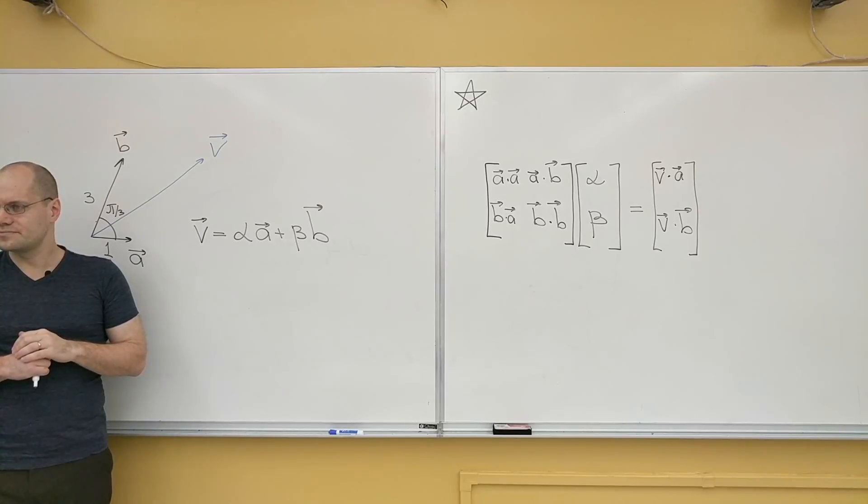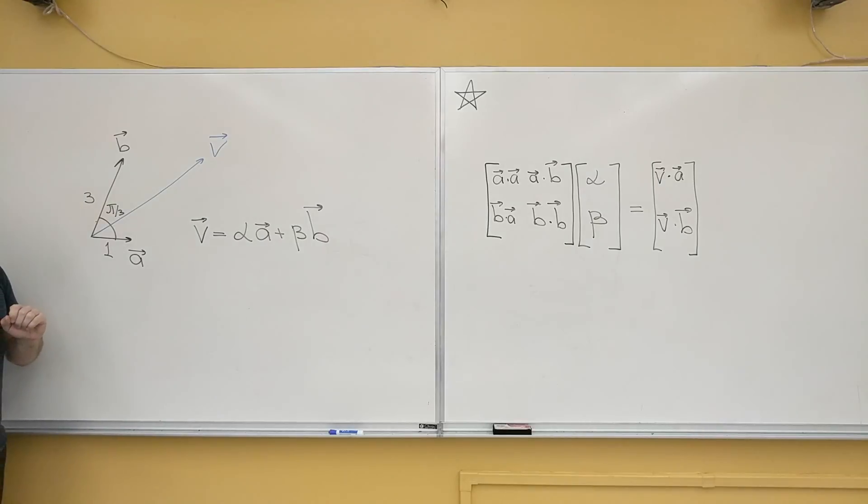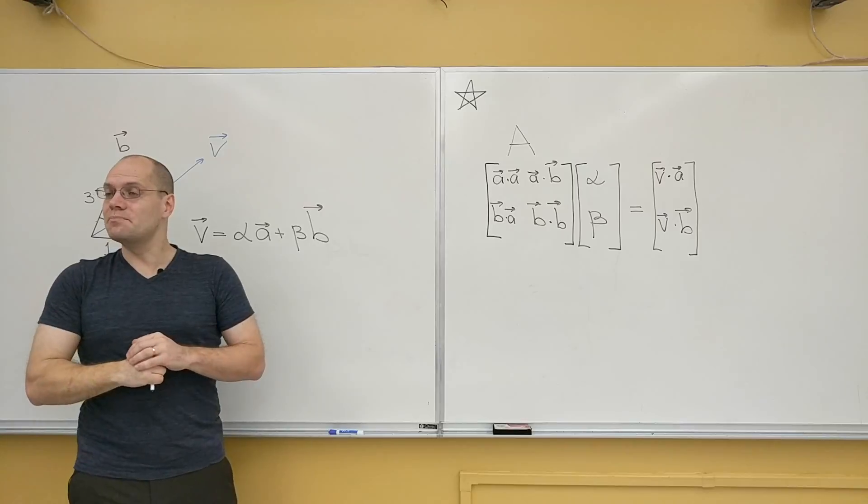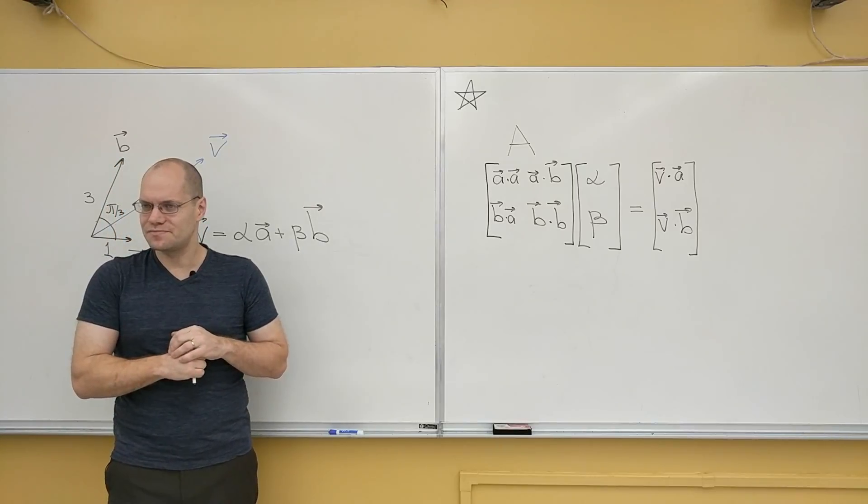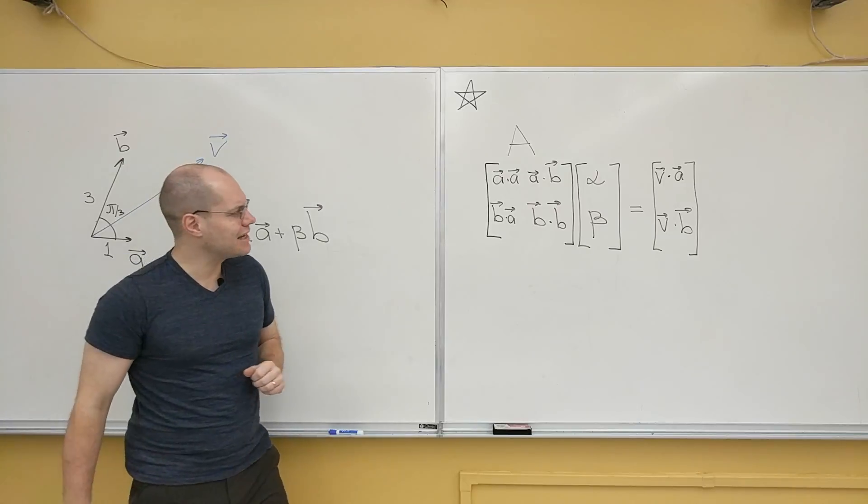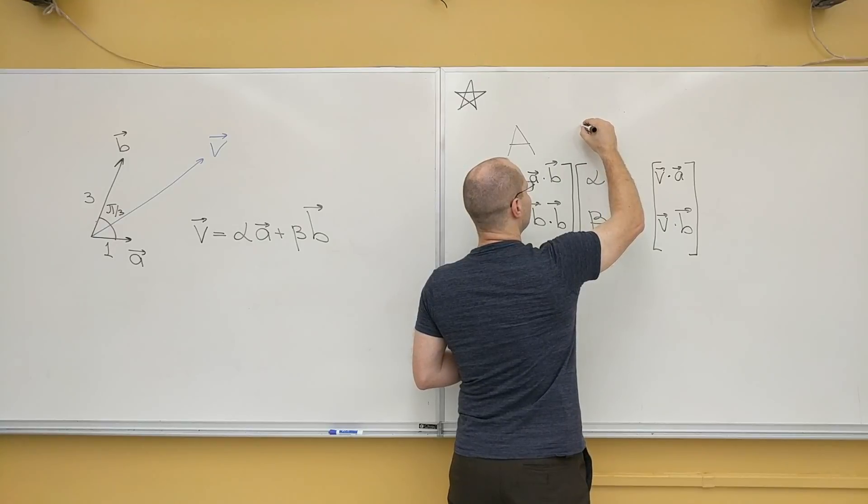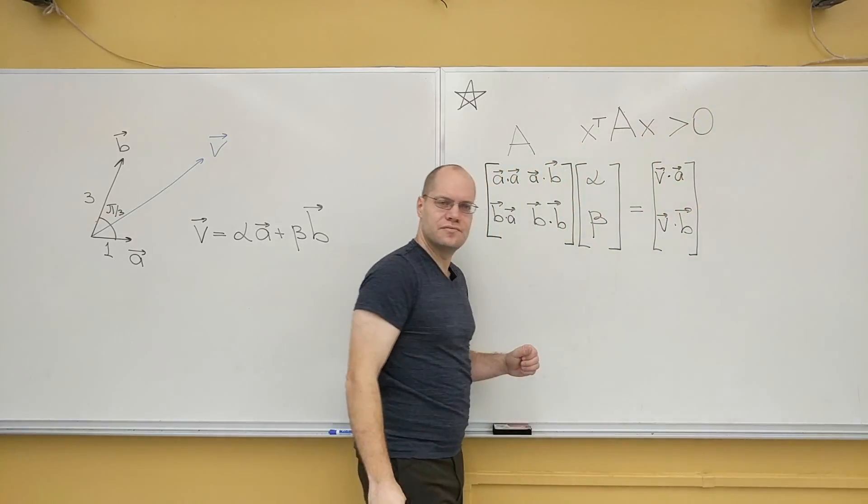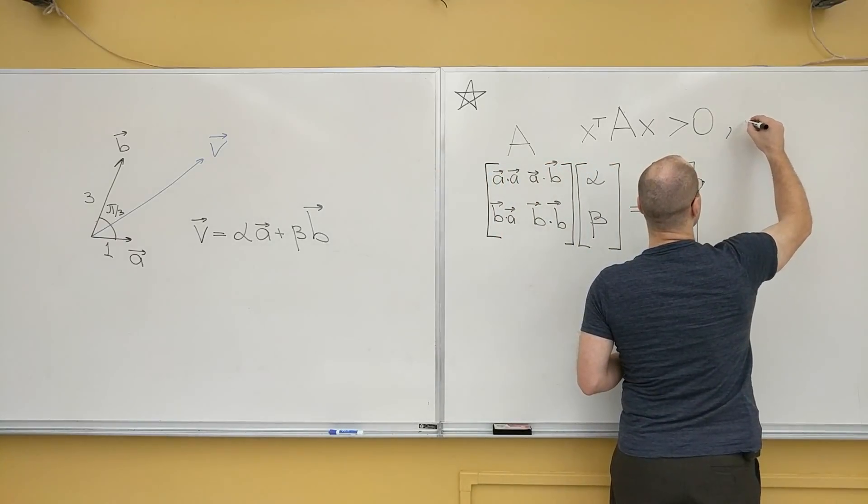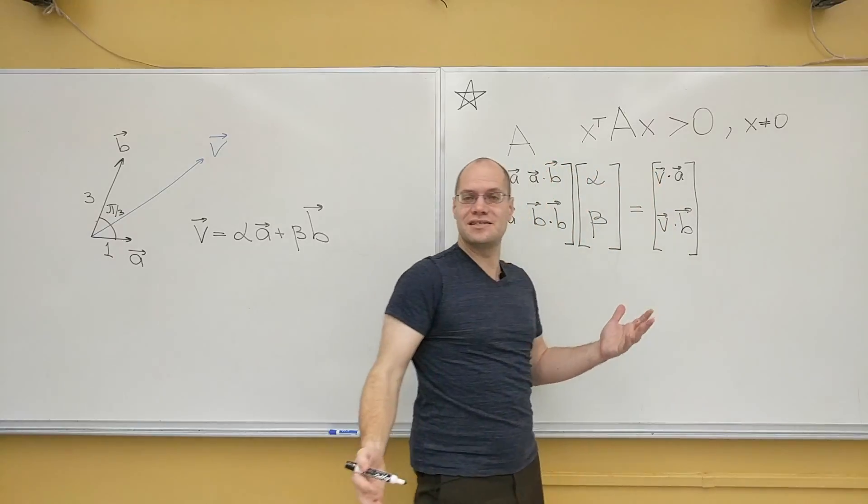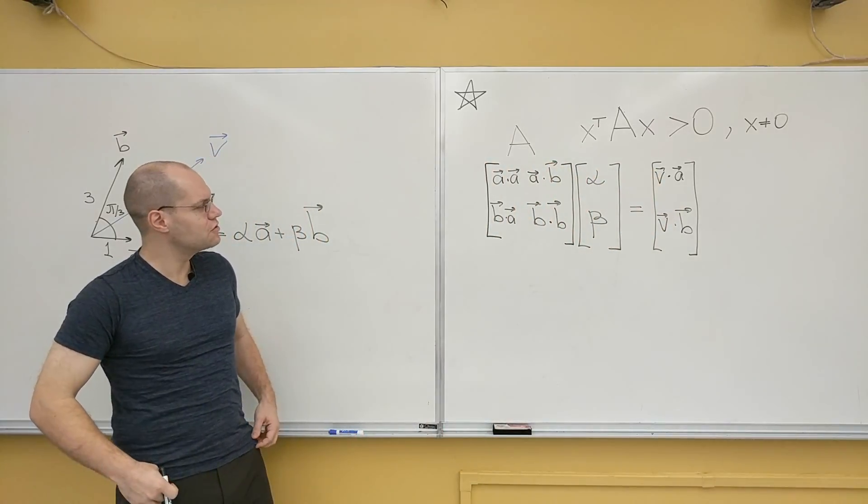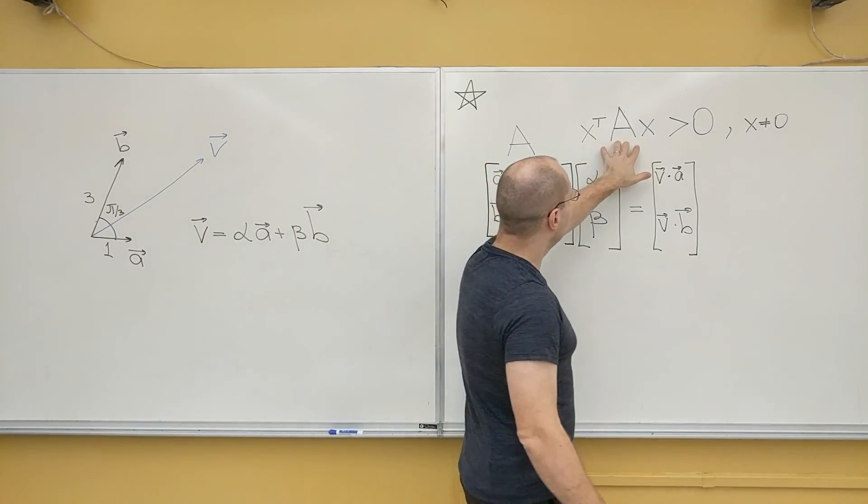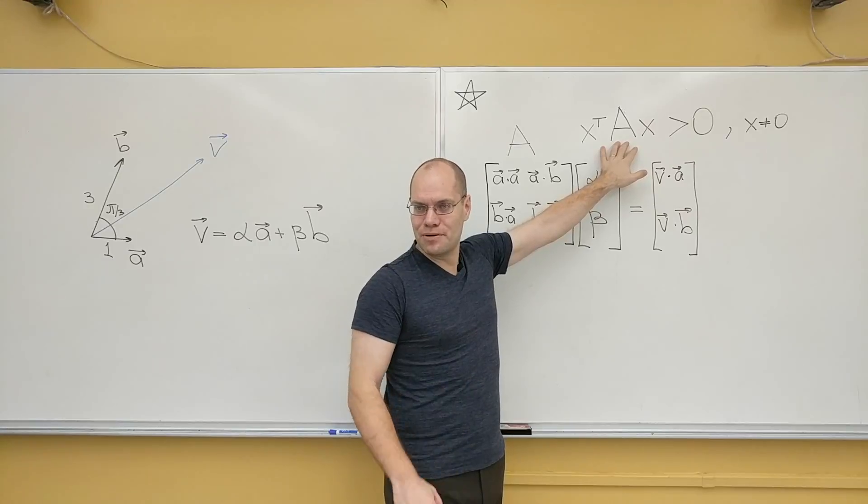Well, first let me remind you the definition. A positive definite matrix A: if for any non-zero vector x, the number x transpose Ax is greater than 0 for any x that's not 0 itself. Because if x is 0, then x transpose Ax is 0. If x is the zero vector in R^n, then x transpose Ax is 0.